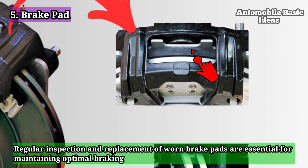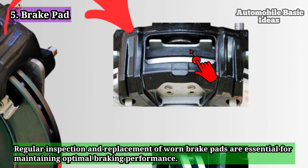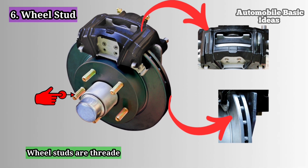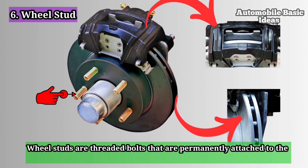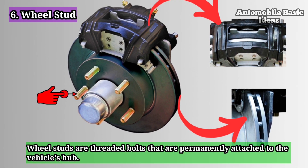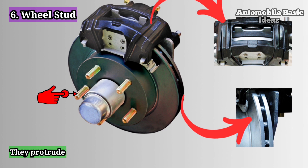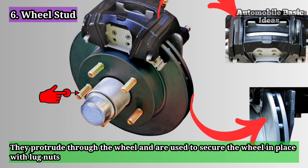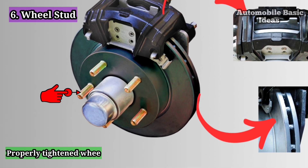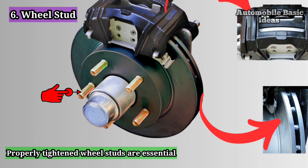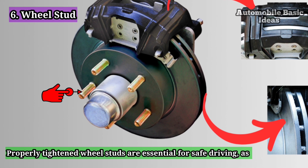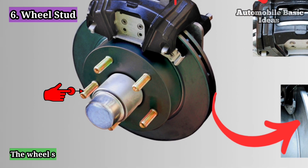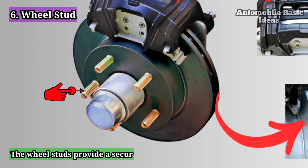Six: wheel stud. Wheel studs are threaded bolts that are permanently attached to the vehicle's hub. They protrude through the wheel and are used to secure the wheel in place with lug nuts. Properly tightened wheel studs are essential for safe driving, as loose wheels can lead to accidents.